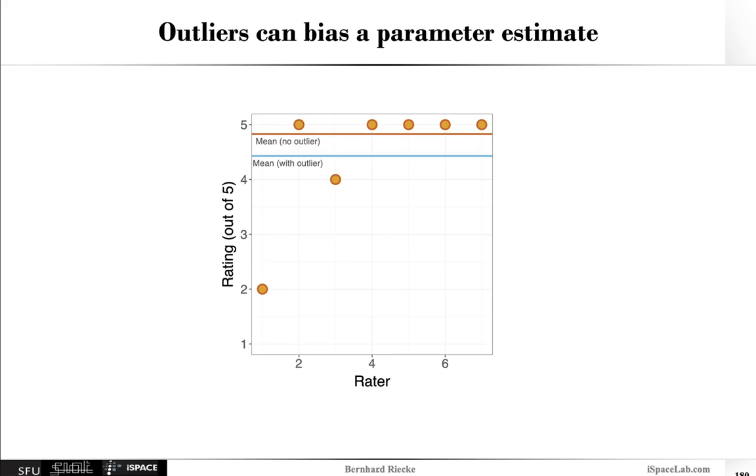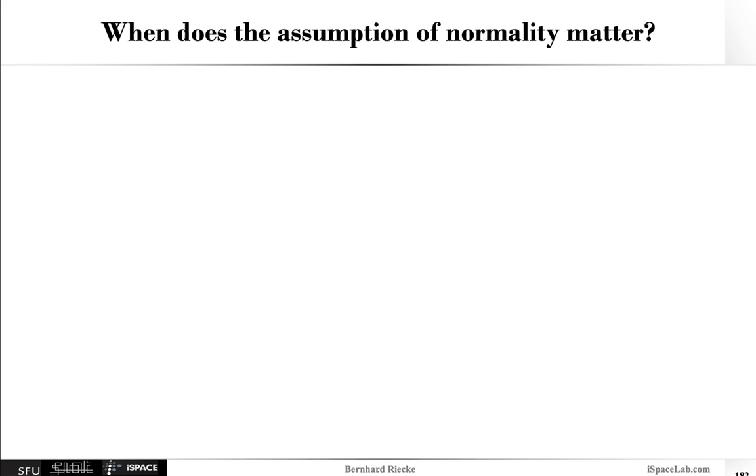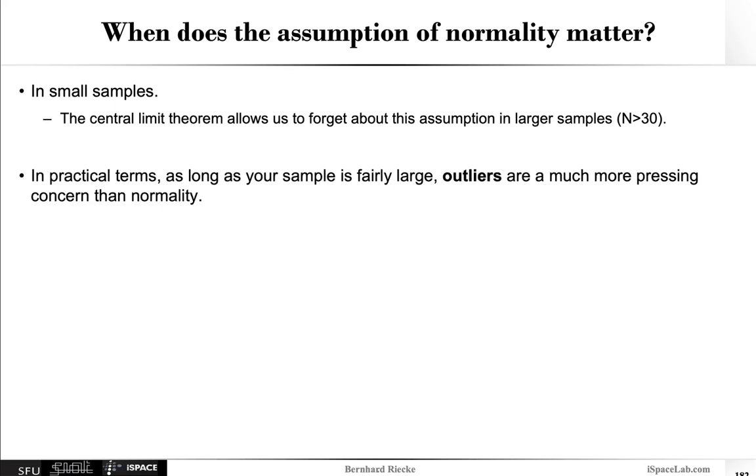So the other question I want to go into is really the assumption of normality and when it really matters the most, because it actually does quite depend on the kind of data and experimental designs that you have. So it matters in small samples, but then the central limit theorem really allows you to forget about this assumption for a larger sample. So once you have more than 30 or so participants then the normality assumption doesn't really matter as much because at least theoretically the distribution should approach normality.